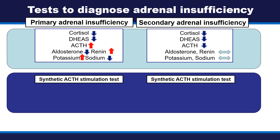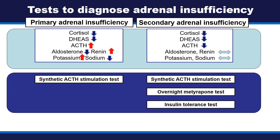Dynamic tests include the cosyntropin stimulation test, or synthetic ACTH stimulation test, which applies to both primary and secondary adrenal insufficiency. Secondary insufficiency can also be diagnosed using the overnight metyrapone test or insulin tolerance test.